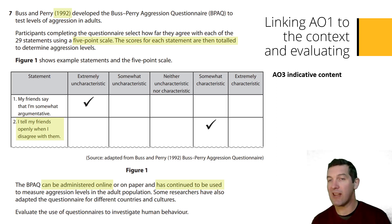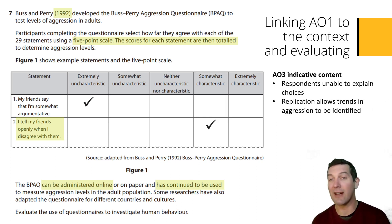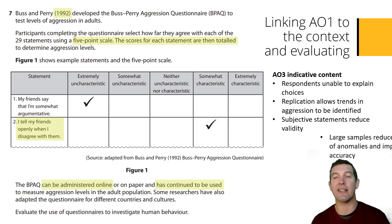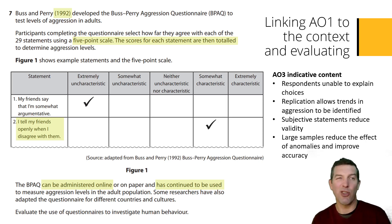Looking at the AO3 content in the mark scheme, now on the right of this slide — again, this is indicative, just a flavour of what you could write. A limitation is that participants who respond can't explain why they've ticked the boxes they have. However, a strength is that we can replicate and see trends over time. A weakness is the issue of subjective statements that might be interpreted in different ways, which is a problem for validity. Finally, a positive point is the ability to obtain large samples. You'd probably want to cover at least two or three of these points.